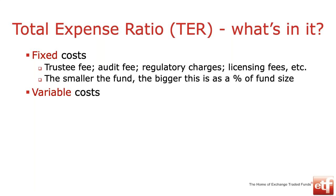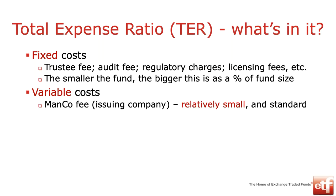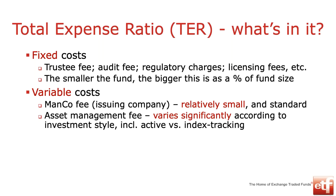Then there's a whole host of variable costs which are usually a lot more significant in terms of the overall cost. The first is the manco fee — management company — the product issuer, the product provider. Typically the manco fee is relatively small. The big one is the asset management fee. It varies significantly according to the type of investment style, most importantly between actively managed funds and index tracking funds. The management fee is increasingly being disclosed as a separate fee, but it's already incorporated in the total expense ratio — it's all about transparency.